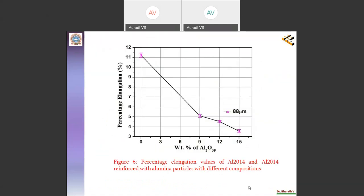Figure 6 will show the decrease in the percentage elongation with increasing the weight percentage of AL203 particulates.